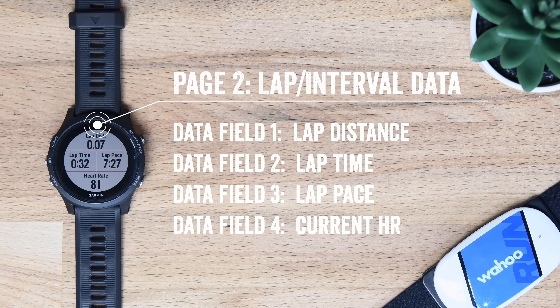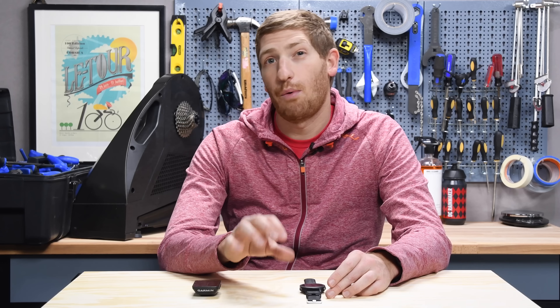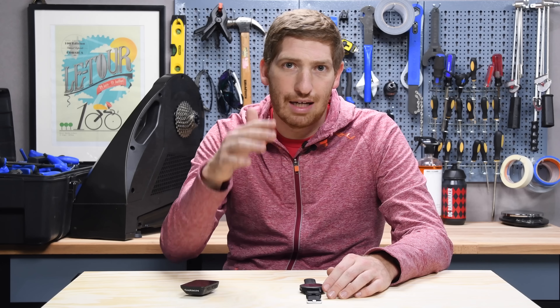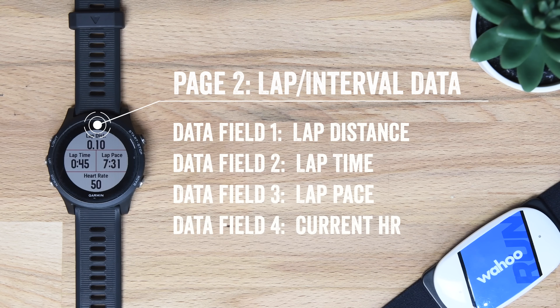The next page is my lap splits. I use laps manually most of the time — not auto-lap, except on long runs — typically for intervals. So it shows me my lap distance, lap time, lap pace, and current heart rate. I don't care about lap heart rate because if I'm doing an 800 meter interval, by the time that heart rate catches up it could be 300 meters in, so the average gets drawn down. I want to know exactly what my heart rate is right now.